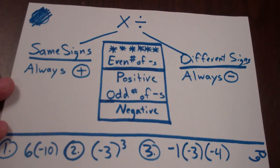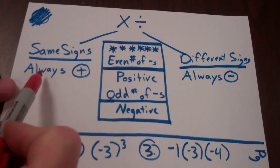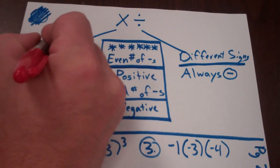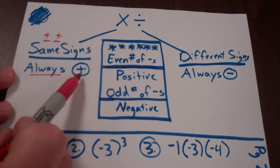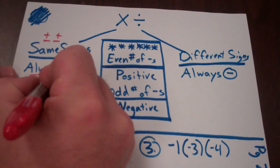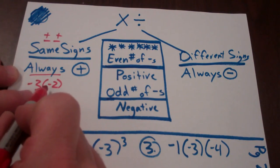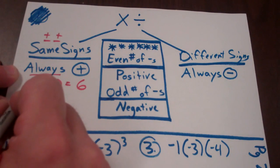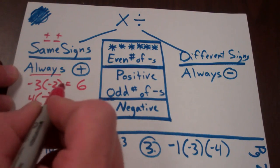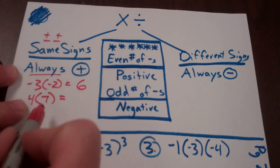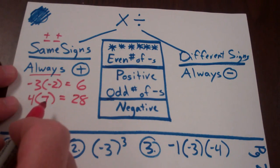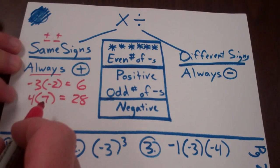You only have two options here. If you're doing a multiplication or division problem, you're going to be multiplying or dividing two numbers at a time. If they have the same sign — a positive times a positive or a negative times a negative — your answer is always positive. So negative three times negative two: do the math with absolute values, three times two is six, and since they have the same sign, your answer is positive. Even four times seven is positive twenty-eight — same sign, always positive.